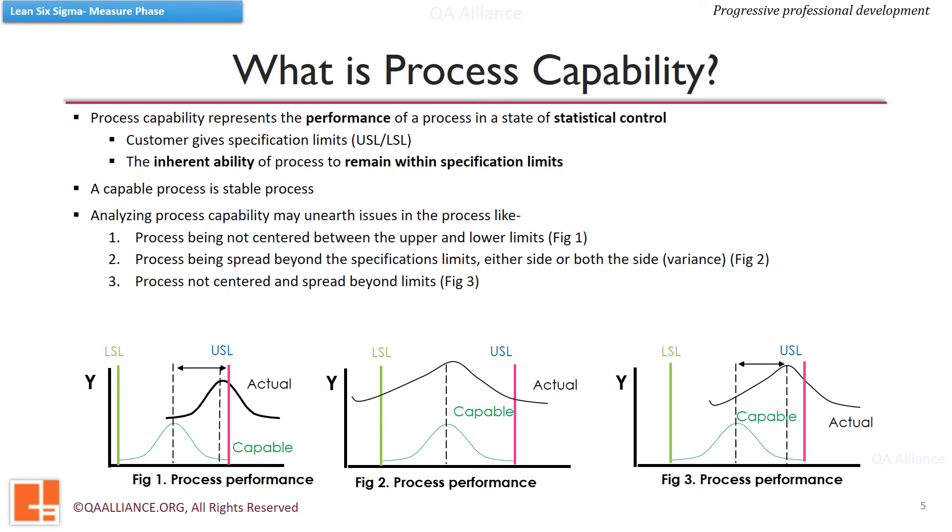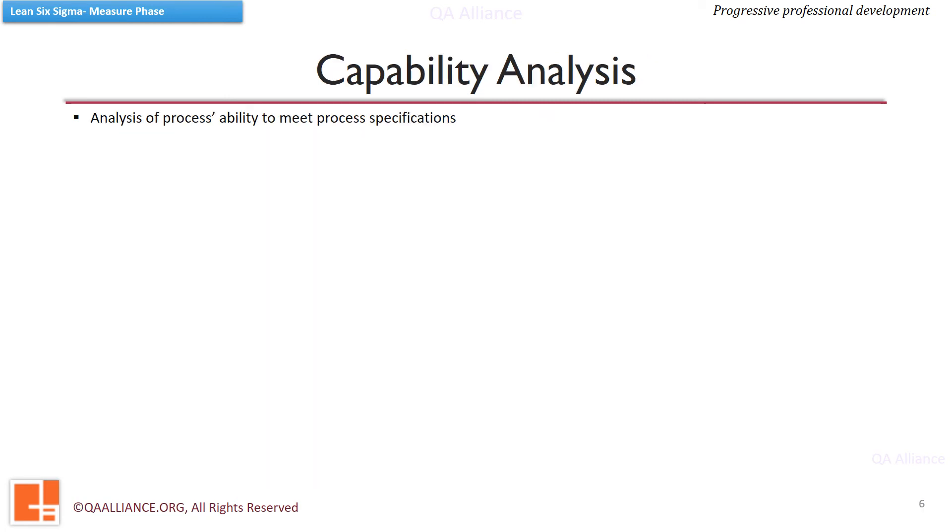We can compare each of these scenarios with a capable process which is represented with green curve. A capable process will generate very less number of defects as it is centered between the specification limits, and also the process spread does not go much beyond the limits. It is very important to assess the process performance in terms of its ability to meet customer requirements or customer specifications.